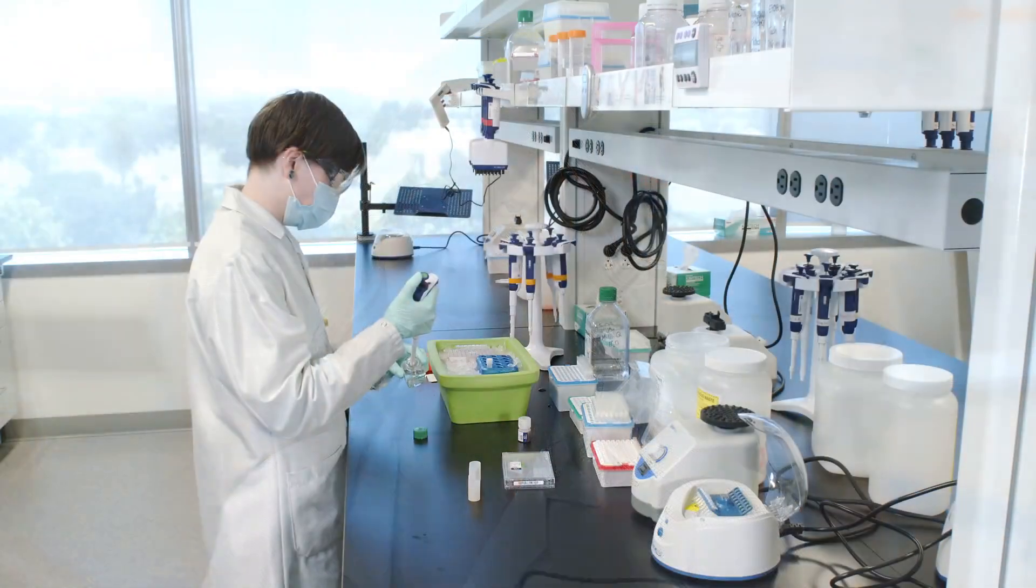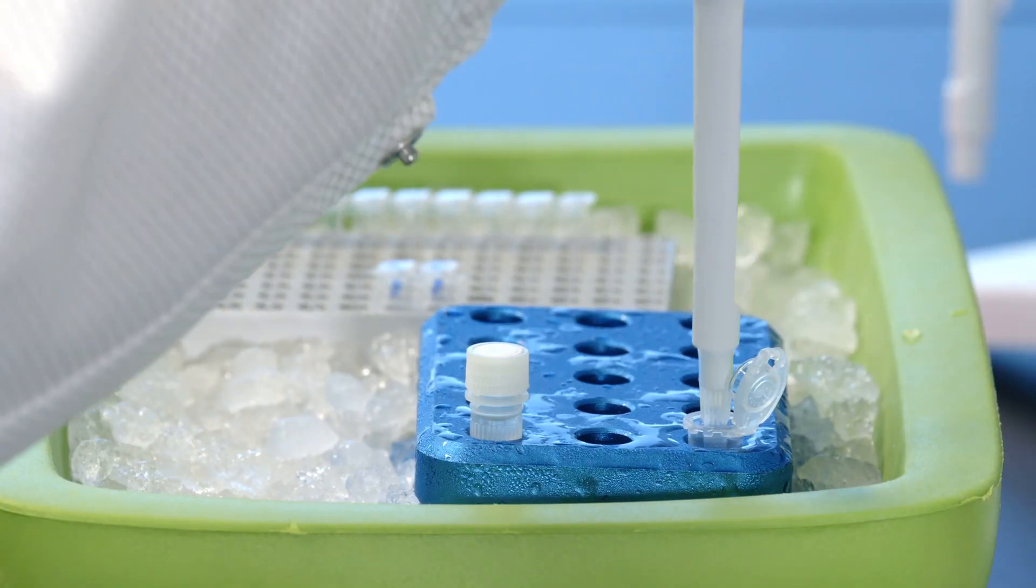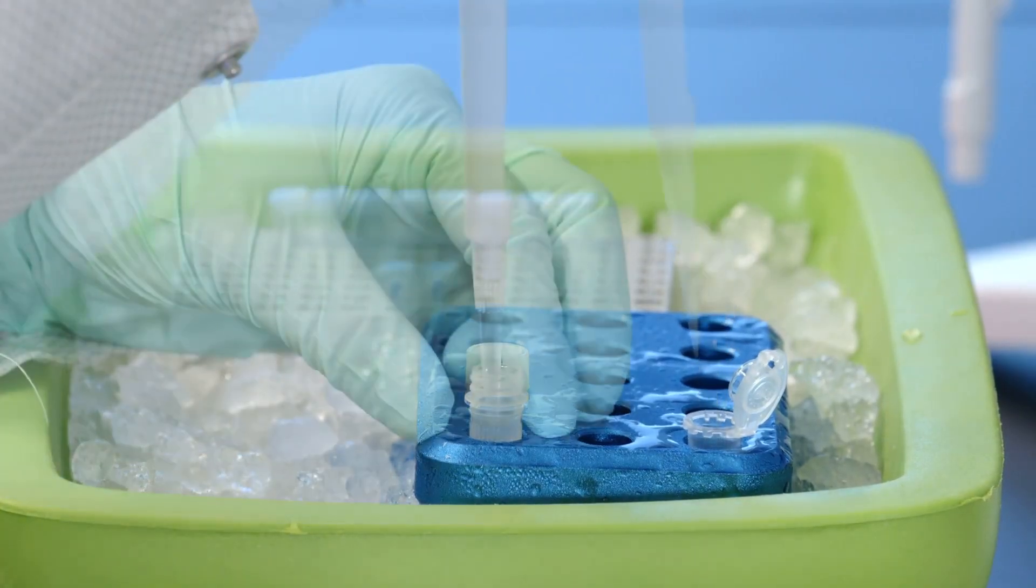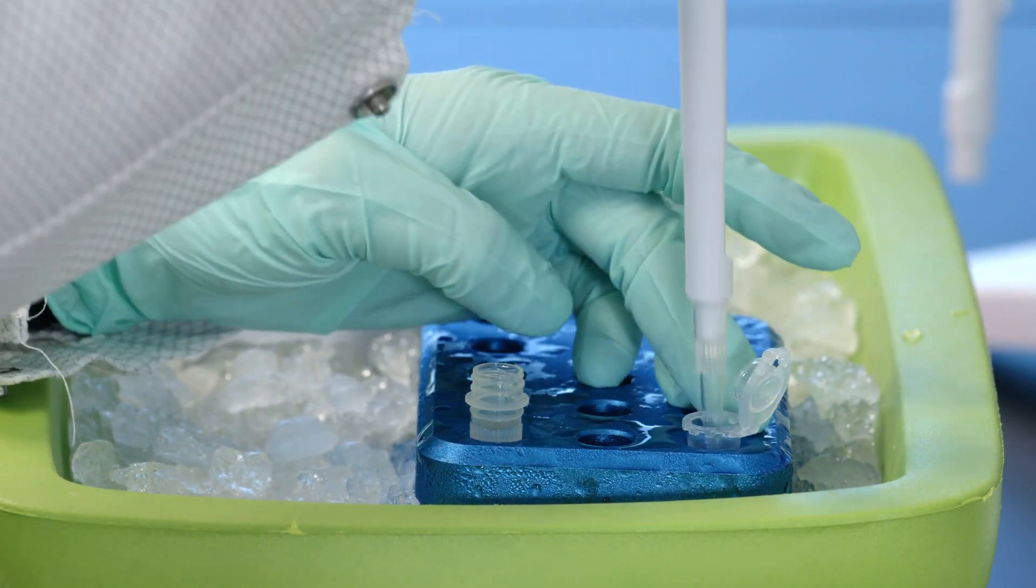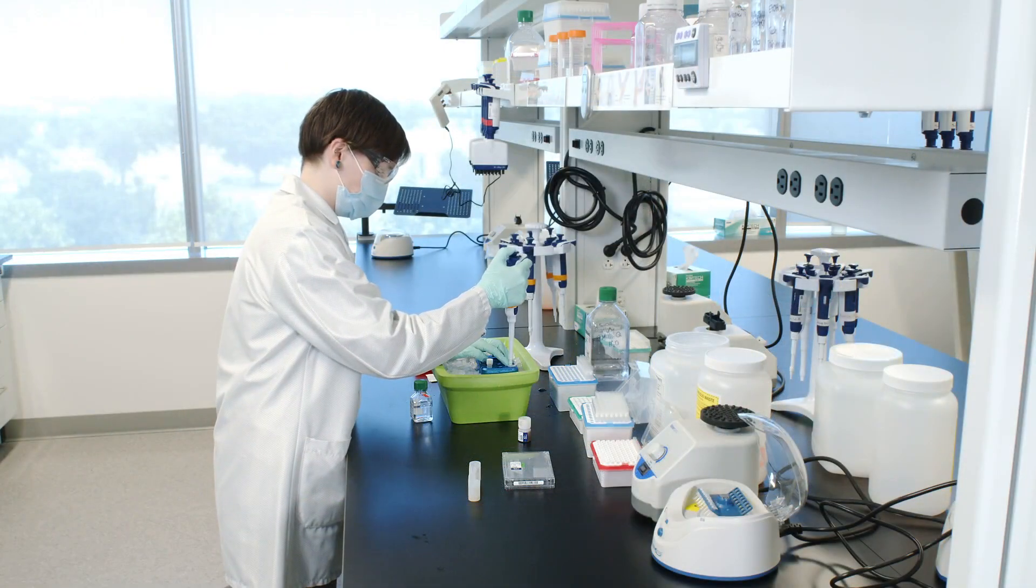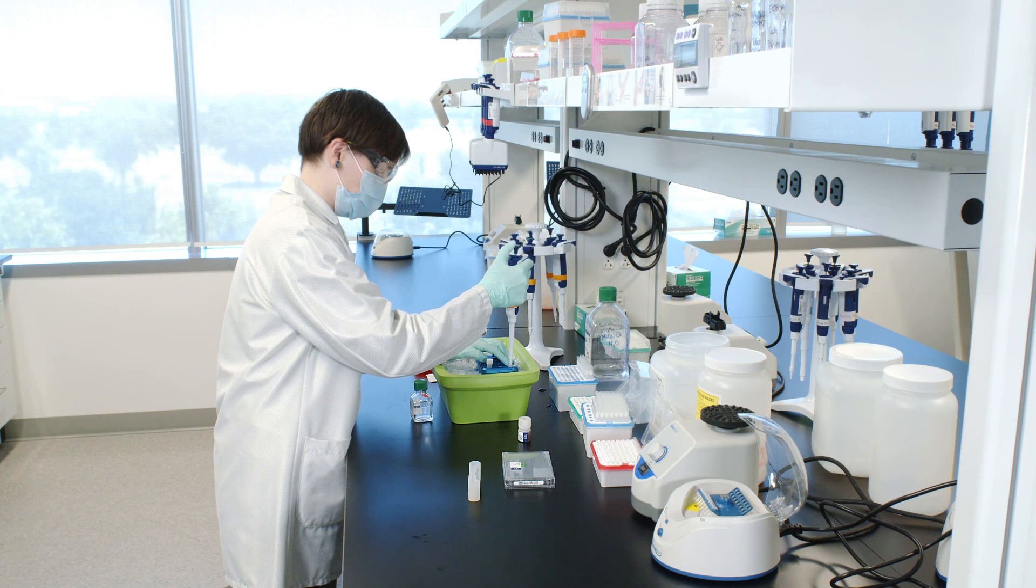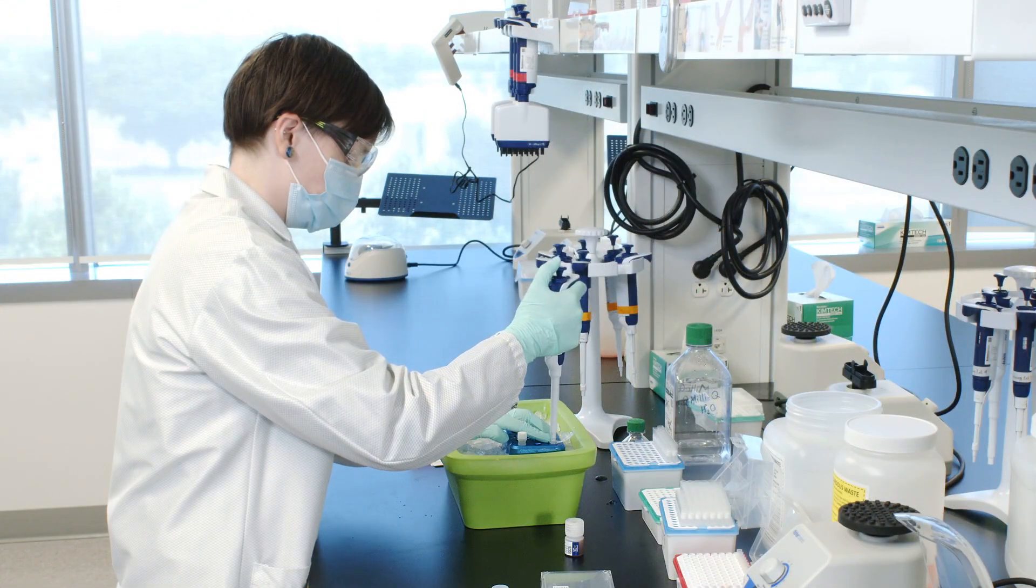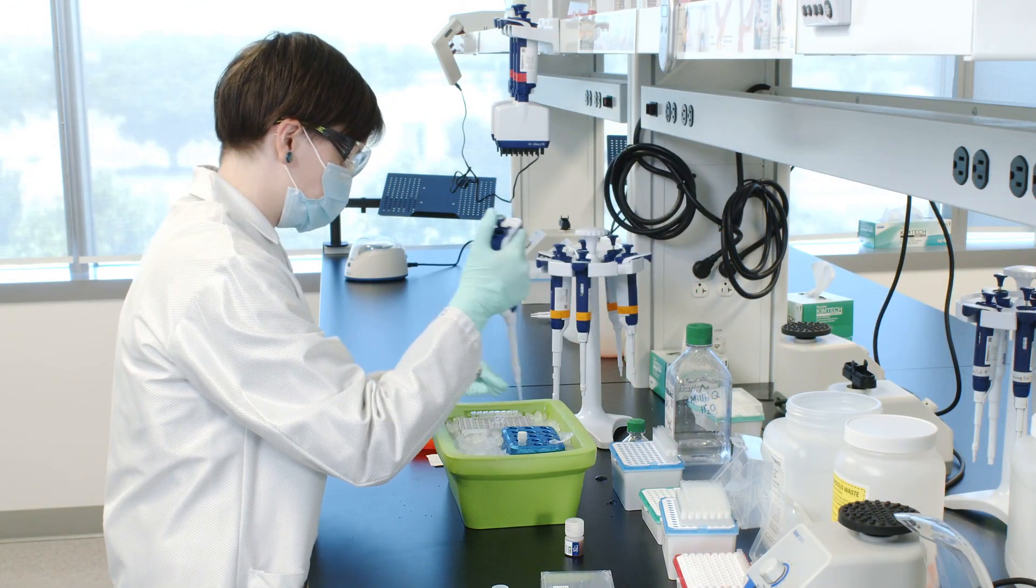Next, we will prepare the amplification master mix by combining nuclease-free water and Amp Mix B. Pipette mix 10 times shortly before use. Add 70 microliters of amplification master mix to a tube in an eight-tube strip for each sample.